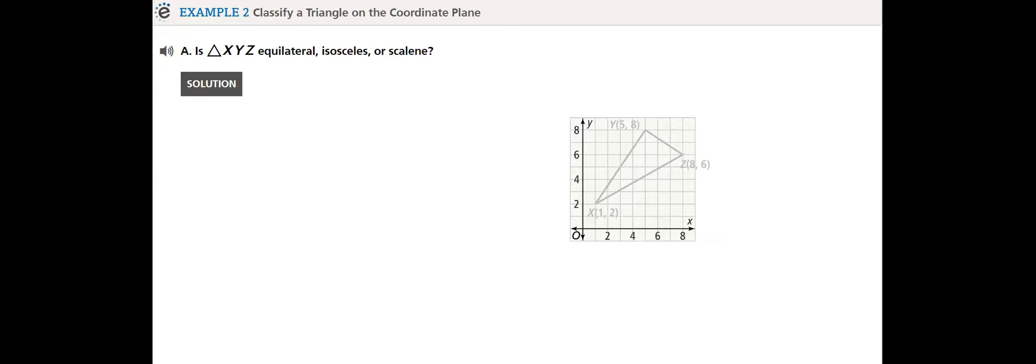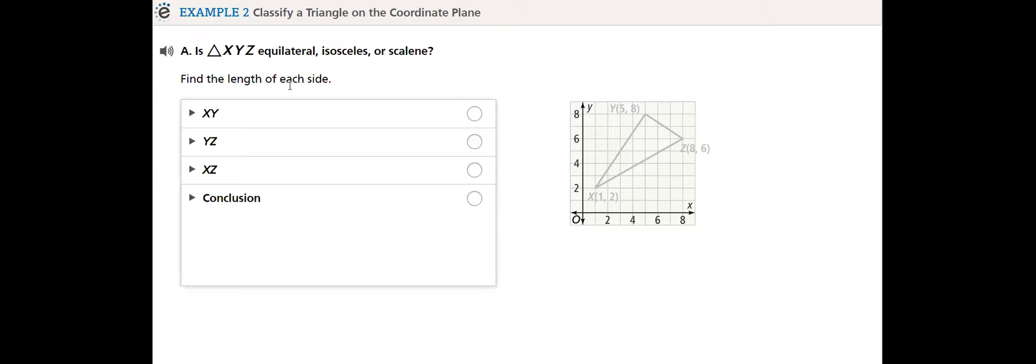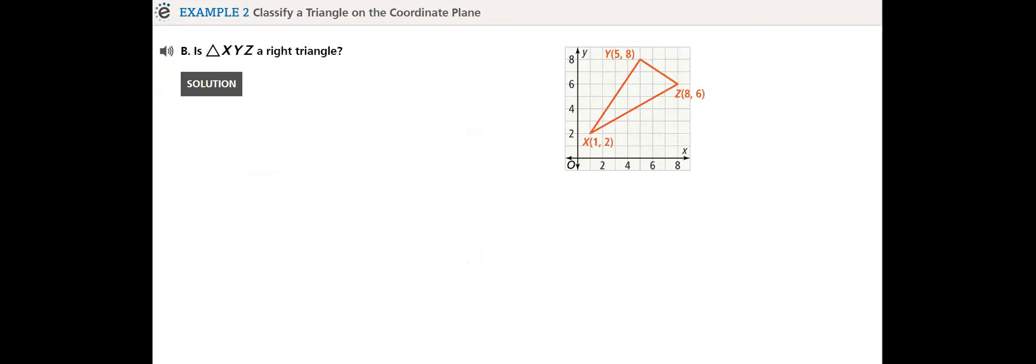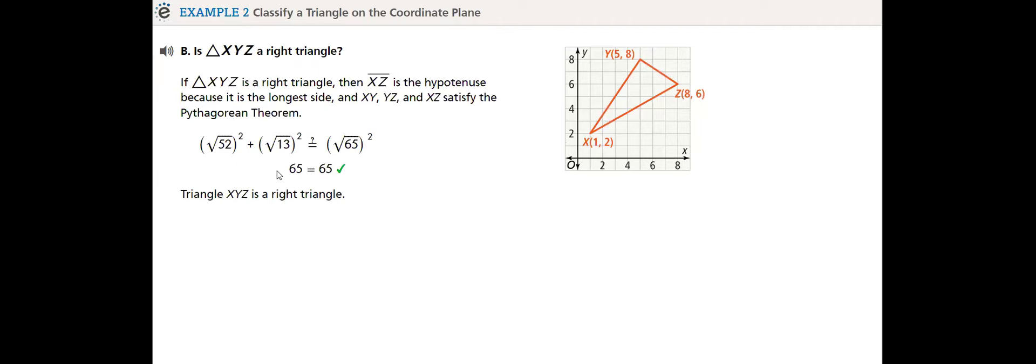In Example 2, we will classify a triangle on the coordinate plane. How to classify a triangle? Is it equilateral, isosceles, or scalene? Of course, when I talk about length, I'll be using the distance formula for each one of them, and then we compare the distances to get the answer. If I want to decide if it's a right triangle, what do we do? Right triangle means 90 degrees.